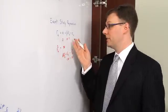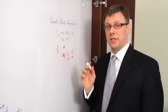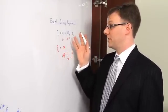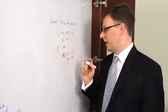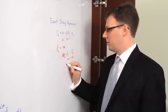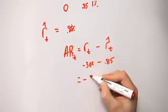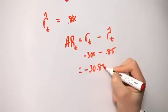So we're assuming that the index was actually up this day by 1 percent and so we would have expected this stock after considering industry factors to actually rise 0.85 percent. So the total abnormal return is actually minus 30.85 percent.